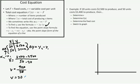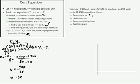So our variable cost is $30 for each unit produced. Our cost equation is C of X equals V times X plus F, but we don't know the fixed cost yet. To find it, we use the point-slope form of the equation of a line.